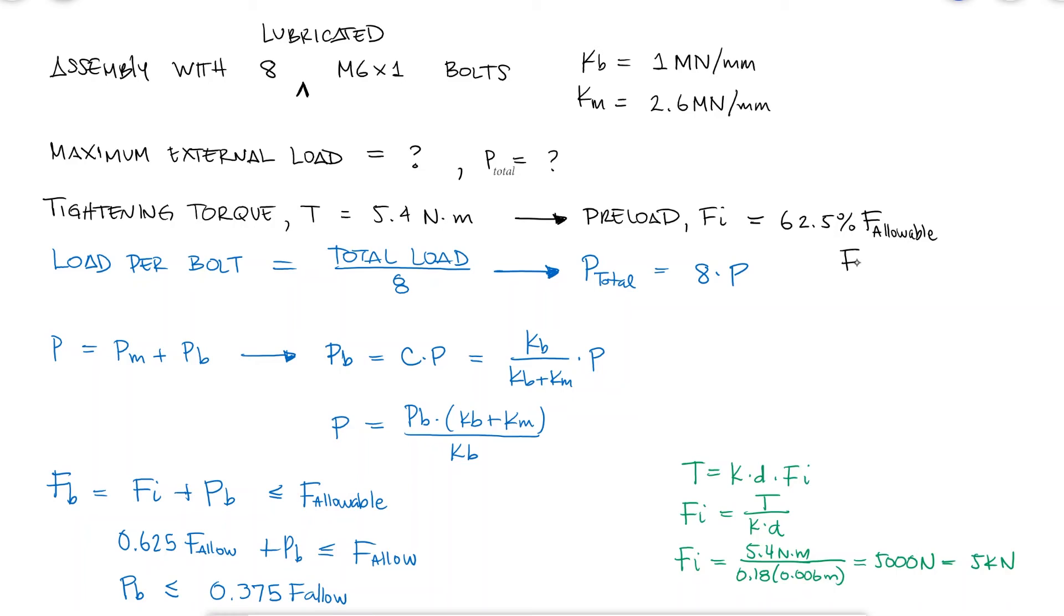This means that the maximum allowable force at the bolt is 8 kN, that the fraction of the external load at each bolt that actually makes it into the bolt, not the members, can be as high as 3 kN, that the external load at each bolt is 10.8 kN, and therefore the total external load at the joint, which has 8 bolts, can have a maximum value of 86.4 kN.